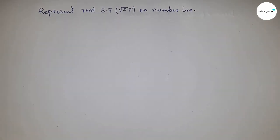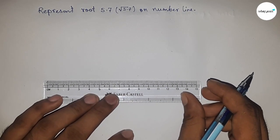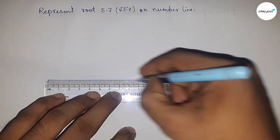We're learning how to represent root 5.7 on a number line. Let's start. First, we'll draw a line of any length here and take an x-line.